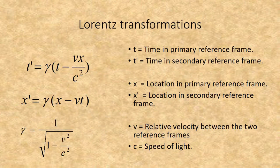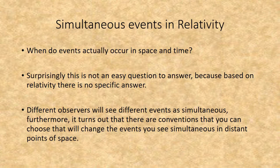These are the Lorentz Transformation Formulas — they form the cornerstone of special relativity. When does an event occur in space-time? Surprisingly, this is not an easy question to answer, because based on relativity, there is no specific answer. Different observers will see different events as simultaneous. Furthermore, it turns out that there are conventions you can choose that will change the events you see as simultaneous at distant points of space.